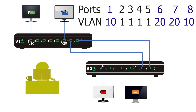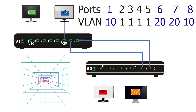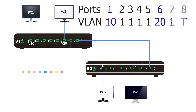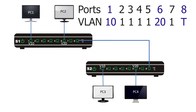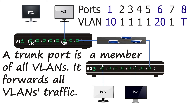Administrators use the second method, which is more convenient. It requires only one connection between switches to allow communication across all VLANs, using trunk ports to connect switches. Trunk ports are special ports — they add VLAN information to all outgoing frames and remove it from all incoming frames.